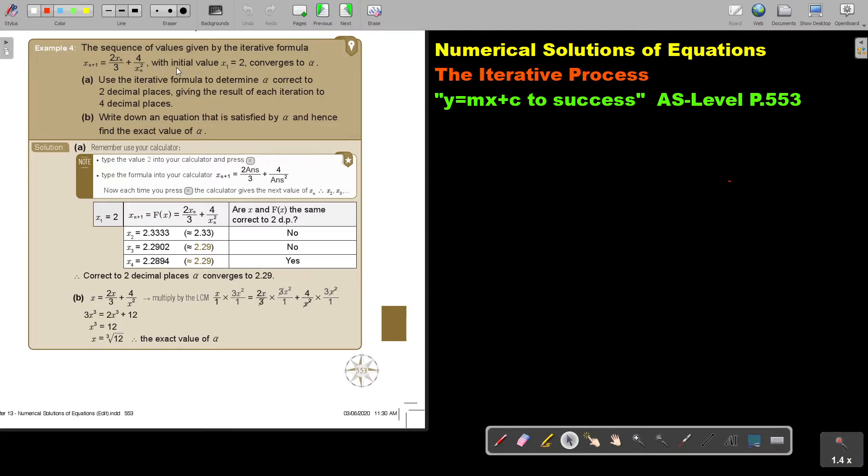The sequence of values given by the iterative formula, with initial value 2, that's very important, they give it to you. Sometimes you make an estimate, sometimes they give it to you. Converges to alpha, the root. So use the iterative formula to determine alpha correct to two decimal places, that's also very important. Two decimal places, but the results in-between must be to four decimal places.